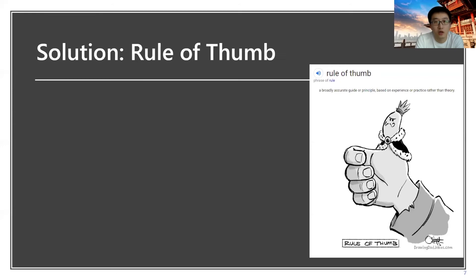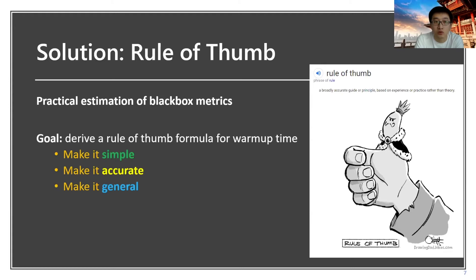To solve the problem, we provide a solution with rule of thumb methods. We always treat cache as a black box and rule of thumb can be used as a practical estimation of those black box measures. Our goal is to derive a rule of thumb formula to estimate the warmup time with several considerations. It has to be simple and cannot contain many parameters to use.